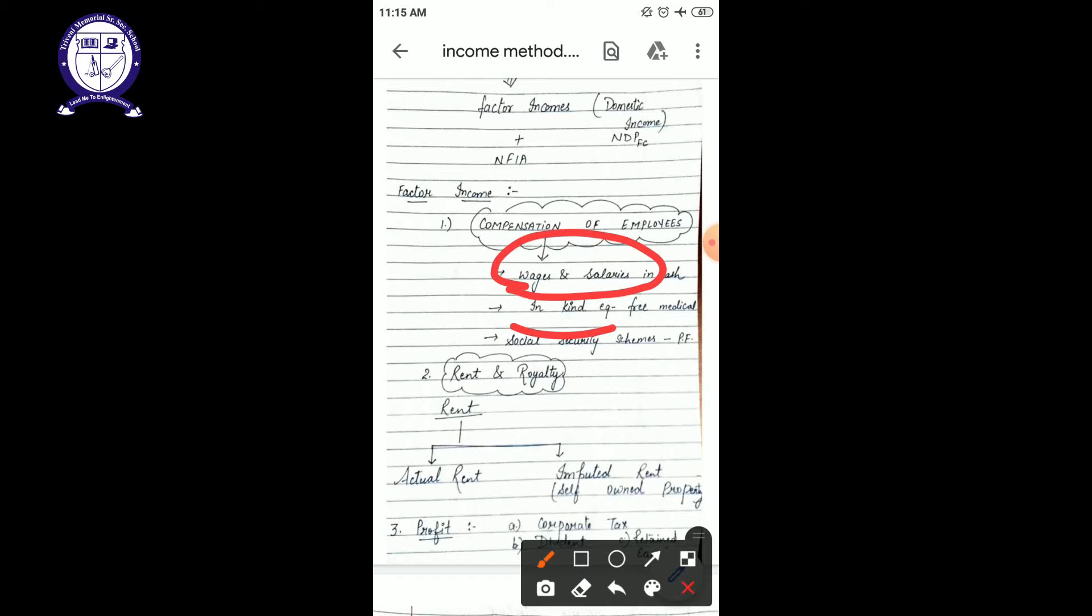For example, if you are giving him or her some kind of free medical care or some free education or some kind of free canteen facilities or free car, free house rent, free houses, these will be included in your compensation of employees and subhead will be wages and salaries in kind.